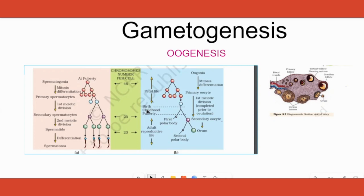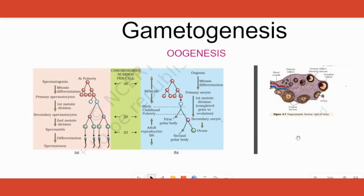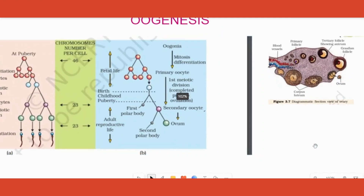Inside the fetal ovary — when the girl is still in the embryo stage — certain changes are happening. There are certain cells inside the ovary called oogonia, and these oogonia start dividing and making many cells. We call these cells primary oocytes.